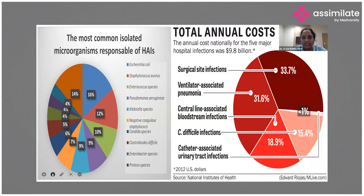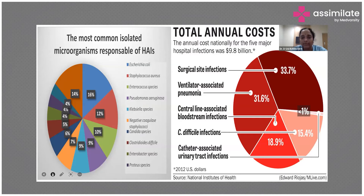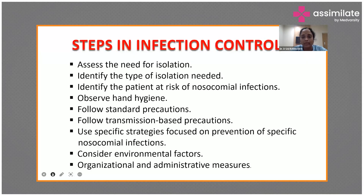The annual cost of hospital-acquired infections is very high. As depicted in this picture, ventilator-associated pneumonia, surgical site infections, central line bloodstream infections, C. diff infections, and catheter-associated urinary tract infections all cost enormously in terms of money, resources, and patient morbidity and mortality. Being aware of these infections and how to prevent them is essential for physicians and all hospital staff.